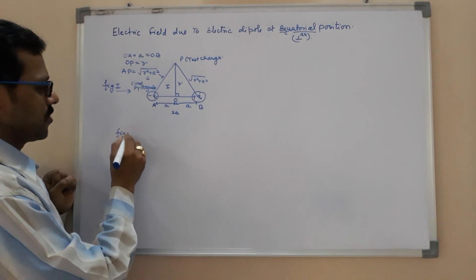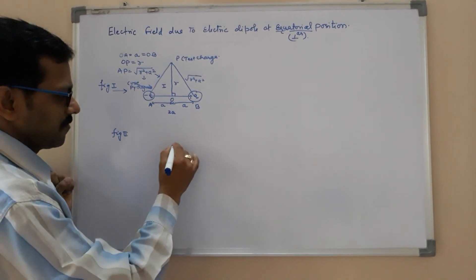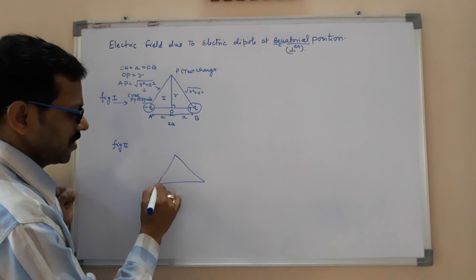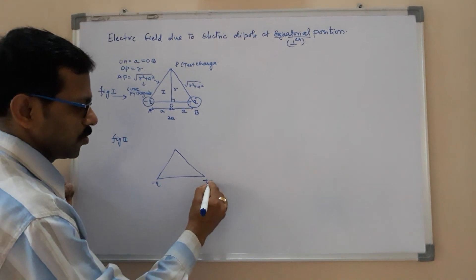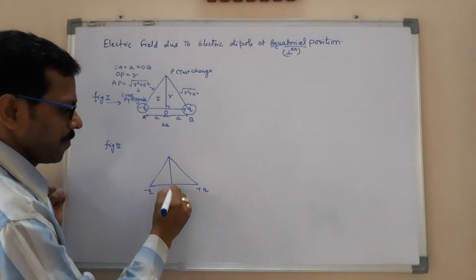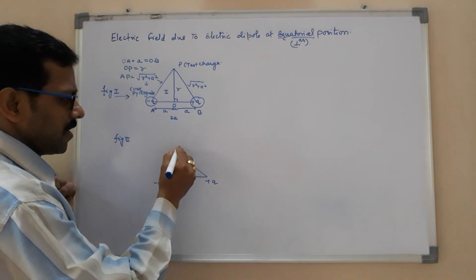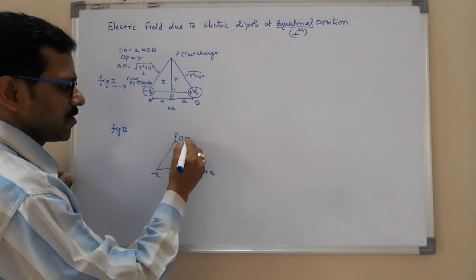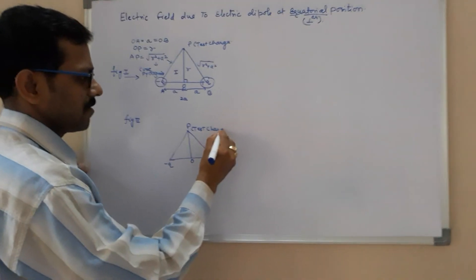Now in figure 2, if you see the direction of the electric field, the direction minus Q plus Q, this is O. What will be, and here we have a test charge.